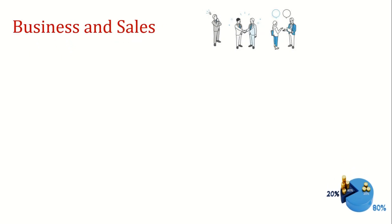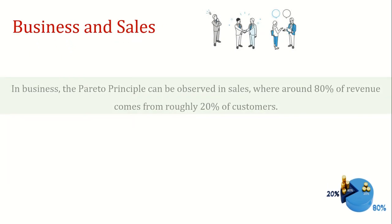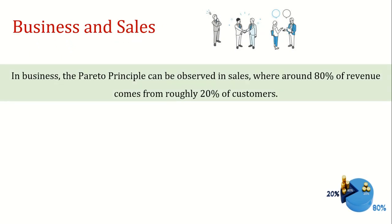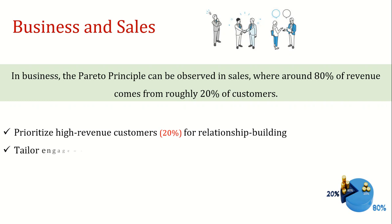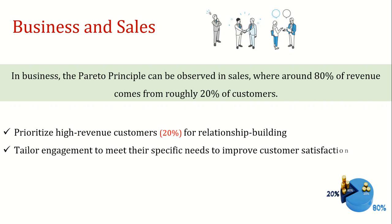First comes business and sales. In business, the Pareto Principle can be observed in sales, where around 80% of revenue comes from roughly 20% of customers. You need to focus on maintaining strong relationships with the top 20% of high-revenue customers, addressing their needs to foster loyalty and drive repeat business.